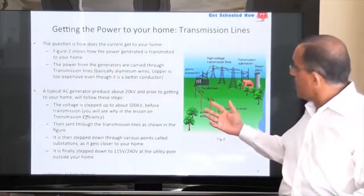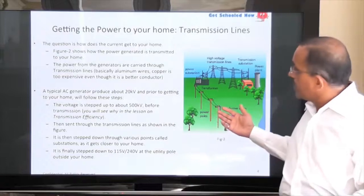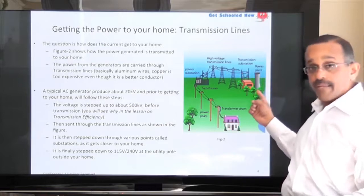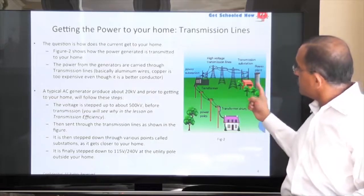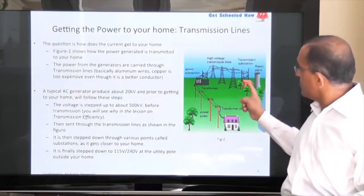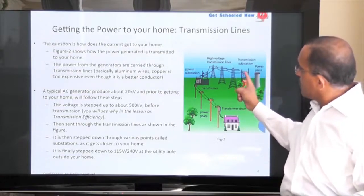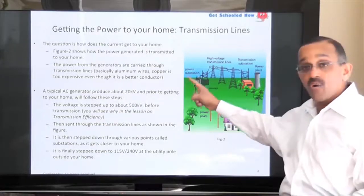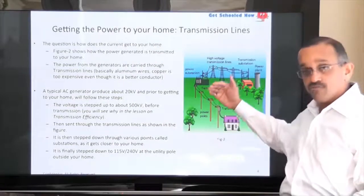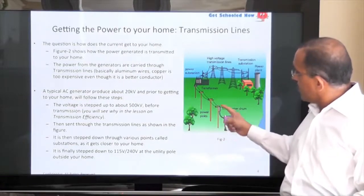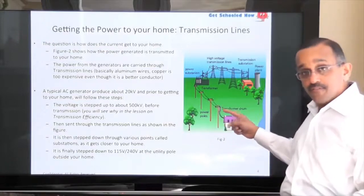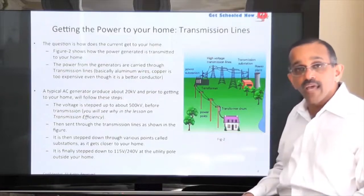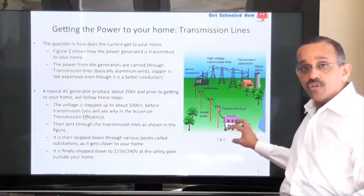Now I want to go back to how power gets to your home. If you have a generating station — in this particular example it's a nuclear power plant — there's a step-up transformer used, and the power is then transmitted through transmission lines and transmission towers to a power substation. The substation in turn reduces your voltage. When it reaches your home, there's a further step-down transformer which steps down the voltage to approximately 240 volts and 120 volts — and that's the power used in your home.